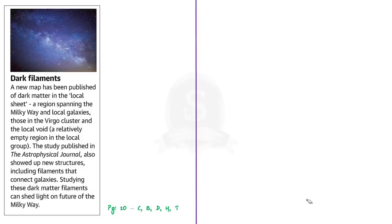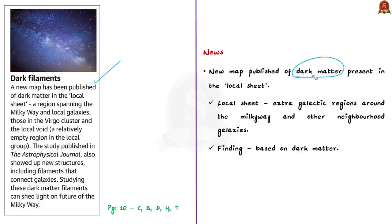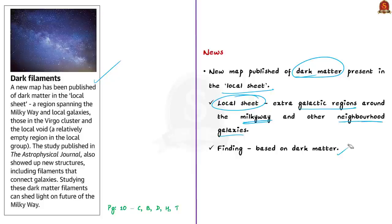Our next discussion is based on a science page article about dark filaments. A new map has been published of dark matter present in the local sheet — that is, the extra-galactic regions around the Milky Way and other neighborhood galaxies. Scientists have now mapped the region around the Milky Way, which has exposed more components about dark matter. Today we will see about dark matter.